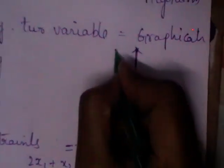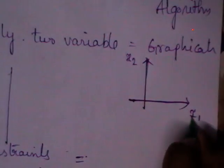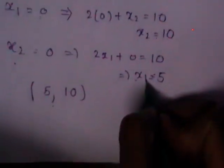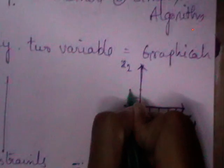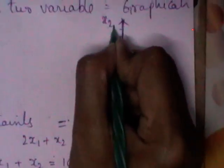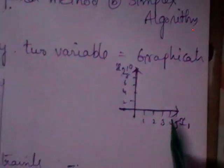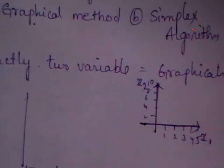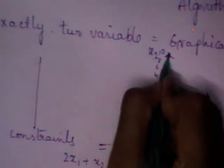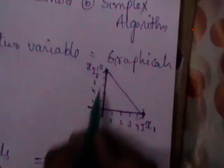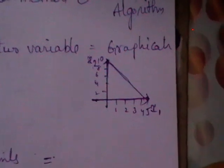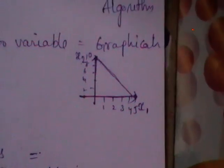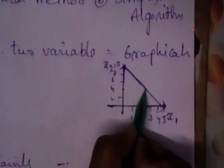On the x-axis, consider variable x1; on the y-axis, consider x2. You have x1 equal to 5 and x2 equal to 10. Join these two points so that this constraint is represented by a line. Consider each inequality as an equation, find the ordered pair, and represent it on the graph as a straight line.